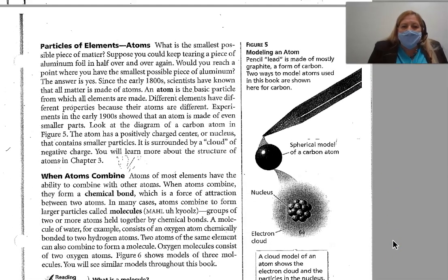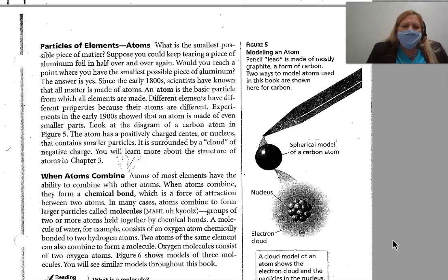Particles of elements — atoms, which are the smallest possible piece of matter. Suppose you kept tearing a piece of aluminum foil in half over and over again. Would you reach a point where you have the smallest possible piece of aluminum? The answer is yes. Since the early 1800s, scientists have known that all matter is made of atoms. An atom is a basic particle from which all elements are made. Different elements have different properties because their atoms are different. Experiments in the early 1900s showed that an atom is made of even smaller parts. The atom has a positively charged center or nucleus surrounded by a cloud of negative charge.